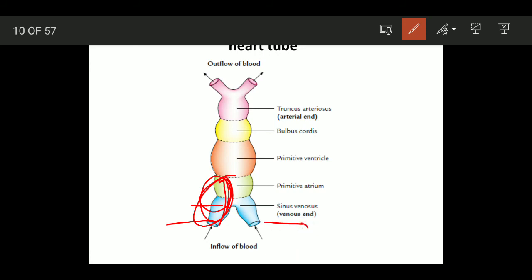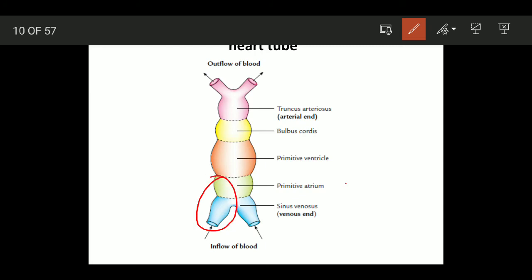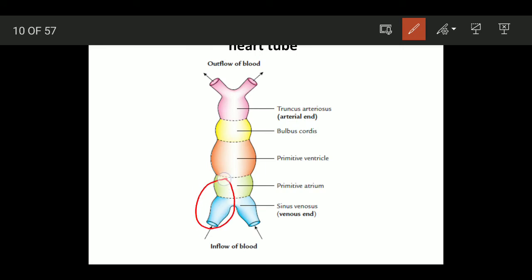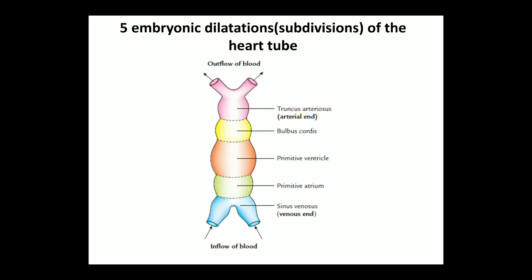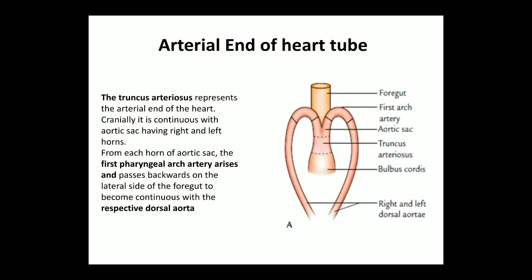The left horn of the sinus venosus with its three tributaries — most of this part will disappear or degenerate, and only the remnant will remain as the coronary sinus, which opens into the right atrium. The part of the sinus venosus — body and right horn — that has been absorbed into the right atrium will form the smooth posterior part of the right atrium.